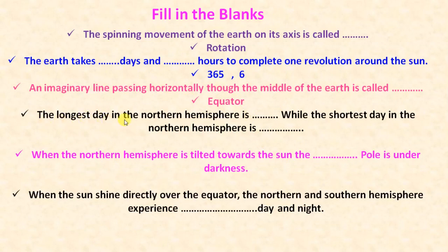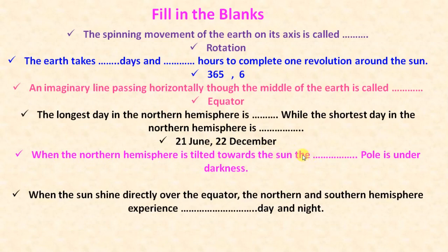The longest day in the northern hemisphere is 21st June, while the shortest day in the northern hemisphere is 22nd December. When the northern hemisphere is tilted towards the sun, the southern pole is under darkness — everything will be opposite. When the sun shines directly over the equator, the northern and southern hemisphere experience equal day and night.